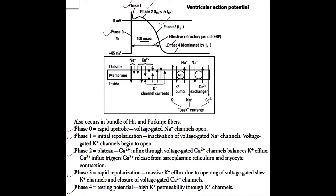During phase two, or the plateau phase, you see a calcium influx into the cell. The important currents to remember here are calcium and potassium. Calcium comes into the cell and potassium leaves the cell, and because of those movements going opposite of each other, you see a plateau phase where the membrane potential is approximately zero throughout.